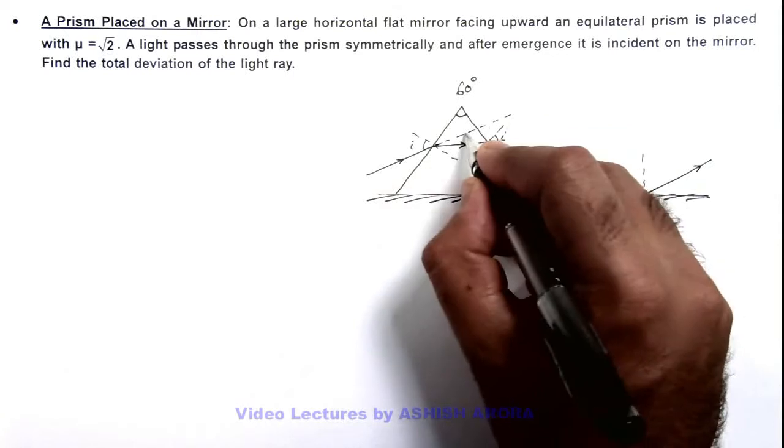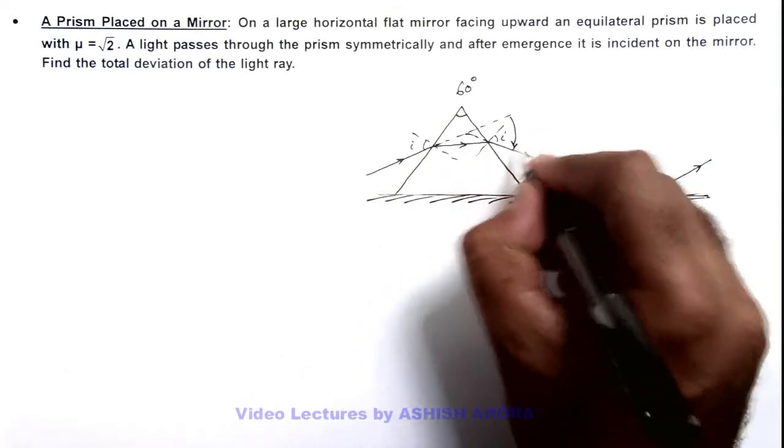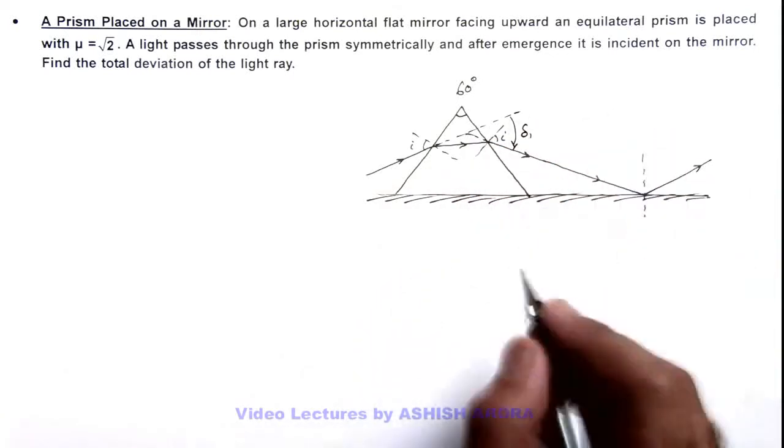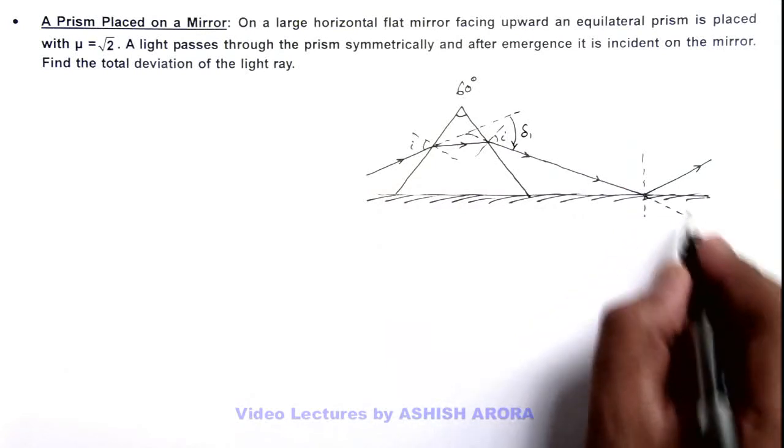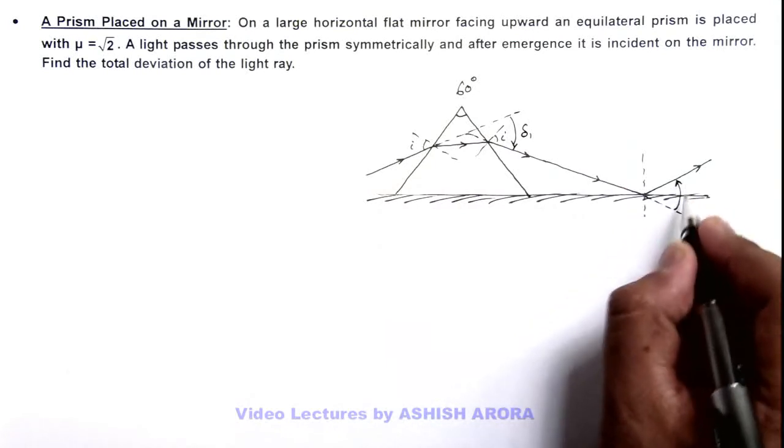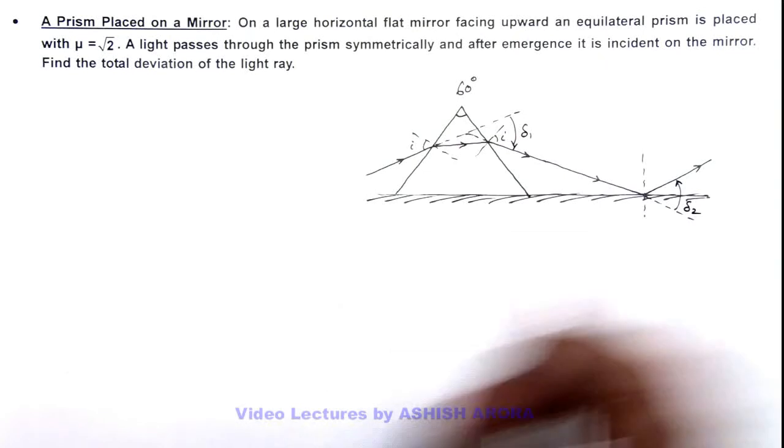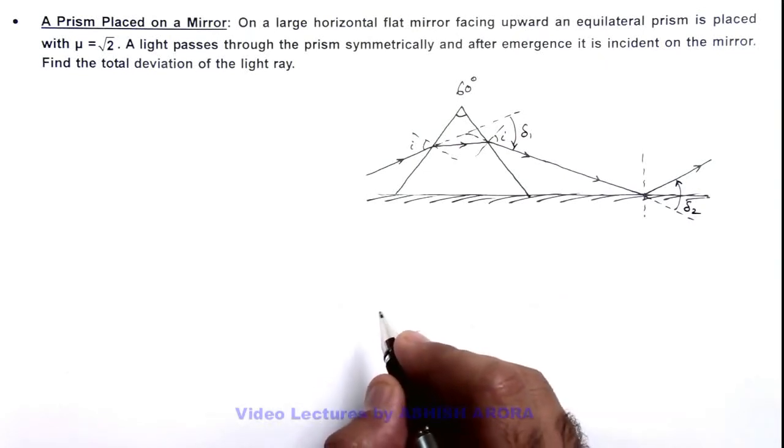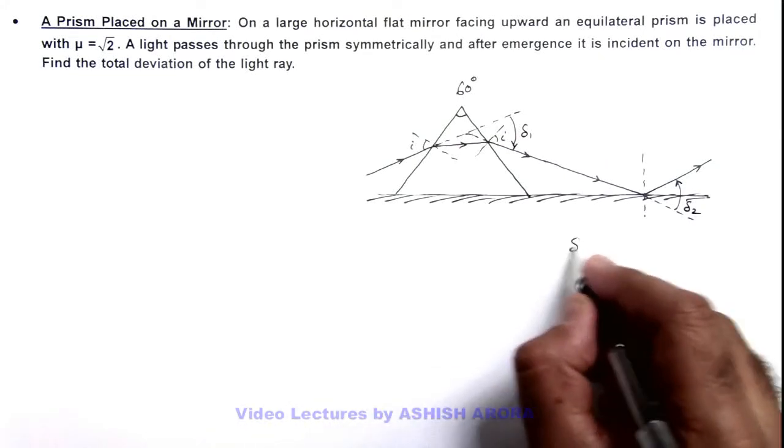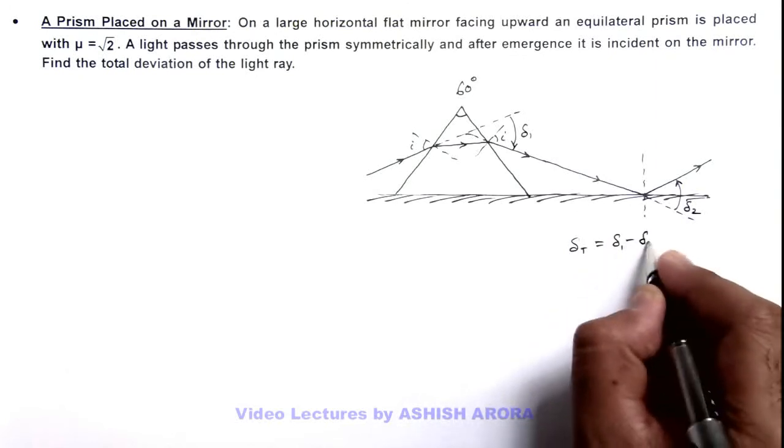Initially by the prism we can see the deviation is clockwise which is delta 1, and finally the light ray is going here so its deviation is anticlockwise which is delta 2. So here we can write the total deviation is equal to delta 1 minus delta 2.